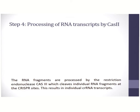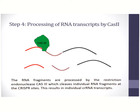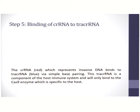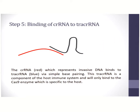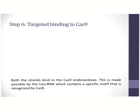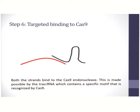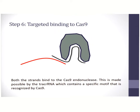In the fourth step, the RNA transcripts are cleaved by the enzyme Cas2 into individual RNA molecules. These RNA fragments are then bound to crRNA and the tracer RNA. In this graphic, you can see the crRNA, which is the transcript indicated in red, binding to the tracer RNA, which is a fixed element. This complex will then go into the next step, which is binding to the Cas9 enzyme. Both these strands together bind to the Cas9 enzyme, and the binding between the tracer RNA and the crRNA is based on Watson-Crick base pairing.